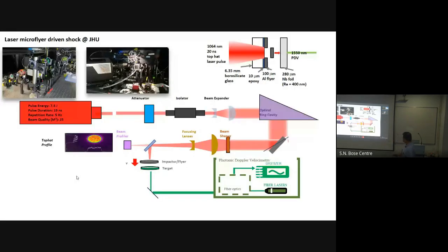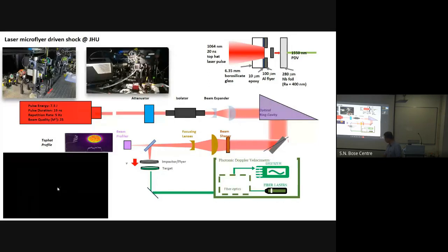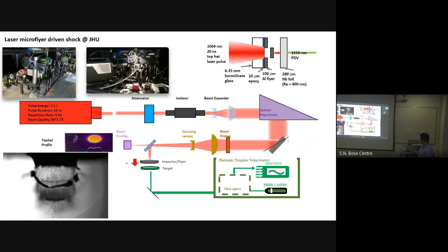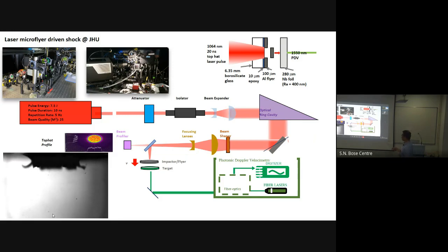At Hopkins, we have laser micro-flyer experiments. A pulse laser ablates a region; the resulting flyer travels at a certain velocity, hits the target, and at the back end we have a photon Doppler velocimeter (PDV) to measure velocity and displacement. We can do many different sample types, though we are limited to about 1 km/s in this system.